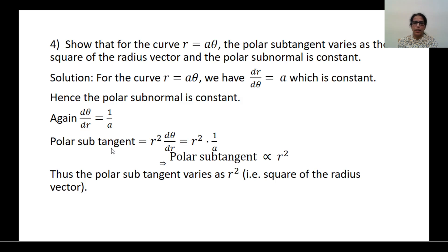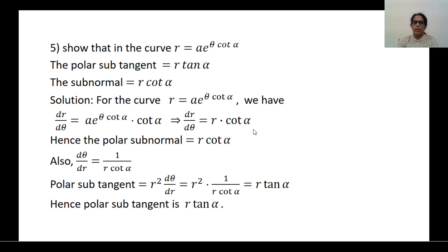Now find the polar subtangent for R = Aθ: it is R² · dθ/dR = R² · (1/A). So the polar subtangent equals R²/A, which means it is directly proportional to R², i.e., it varies as the square of the radius vector. One more problem: Show that for the curve R = A · e^(θ cotα), the polar subtangent is R · tanα and the polar subnormal is R · cotα.